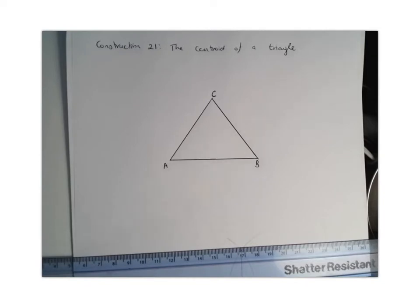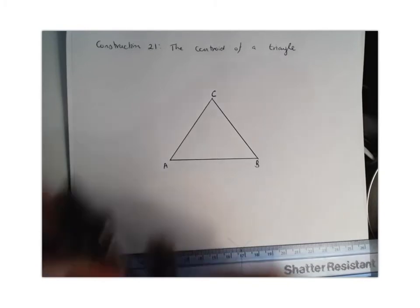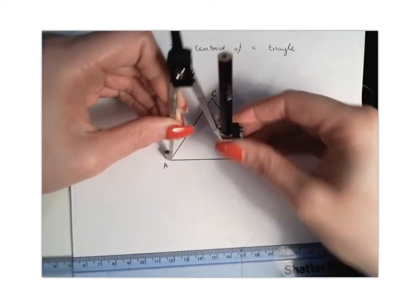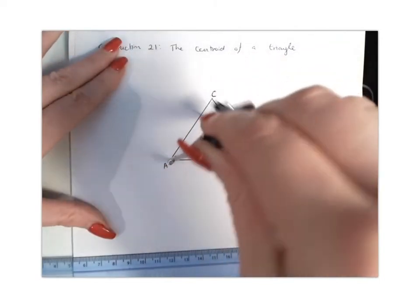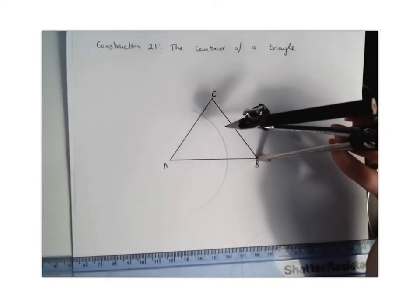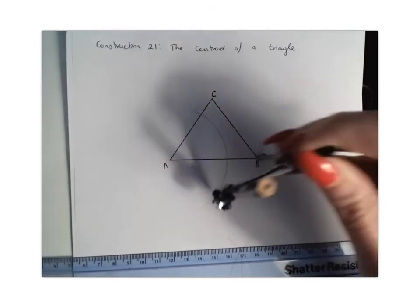So in order to get the midpoint, we're going to find the perpendicular bisector, because remember a bisector cuts a line in half. So we're going to stretch our compass to more than halfway. Again, this is a junior circ construction. You're going to draw an arc at the top and the bottom, or I like to just draw a semicircle.